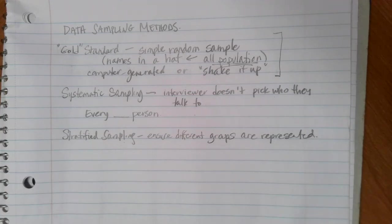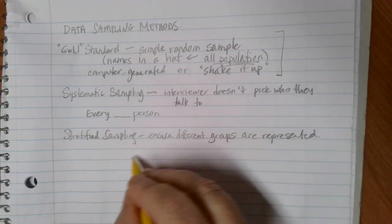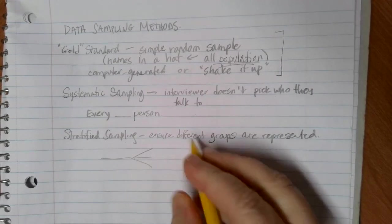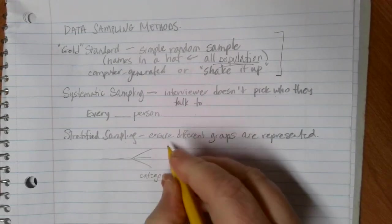Or maybe different ethnicities is going to be an important differentiation. And you want to make sure that you have those pieces equally represented and picked randomly from within those. So the idea with stratified sampling is you're going to have your whole group, split it into different categories and then randomly pick within each of those categories.